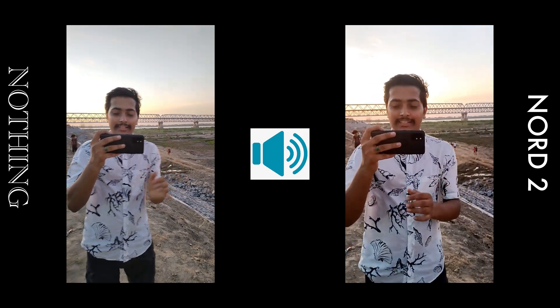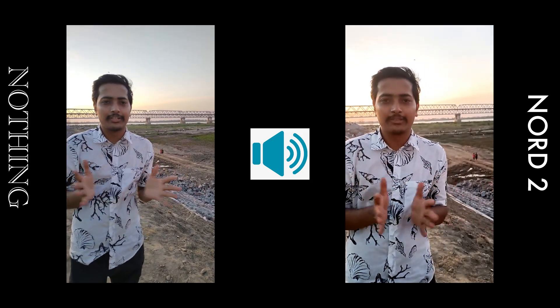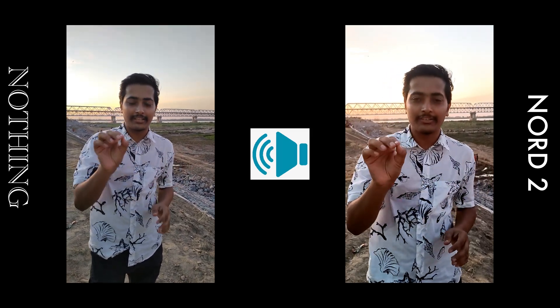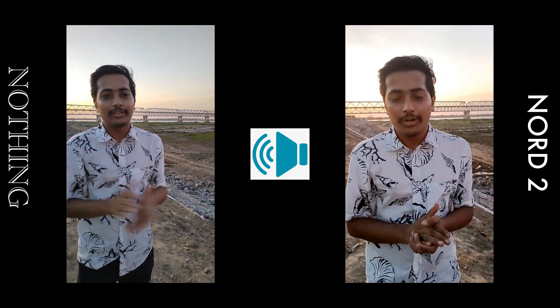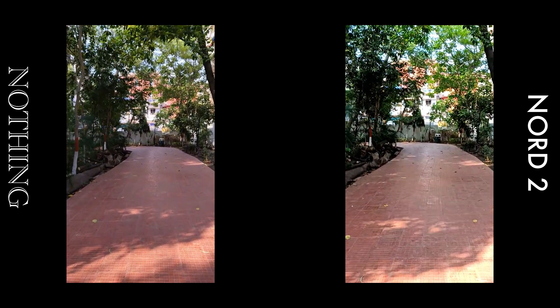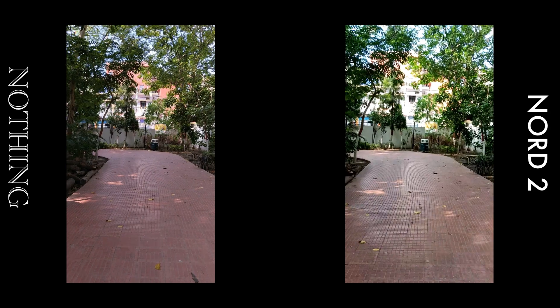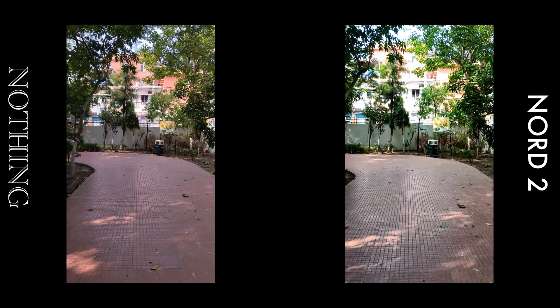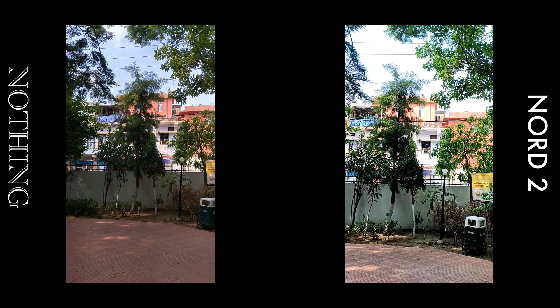Now for the low light rear camera test in 1080p 30fps: Nothing Phone 1's image looks darker compared to OnePlus Nord 2, but overall quality seems better on Nothing Phone 1. In 1080p 60fps, you can clearly see how much better Nothing Phone 1's footage looks — Nord 2 has a green tint on trees and struggles to expose the background building correctly. Definitely in terms of video quality, Nothing Phone 1 is ahead of Nord 2.